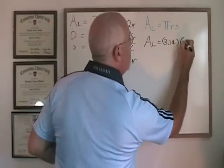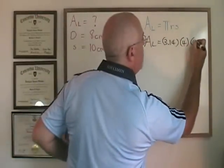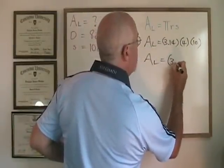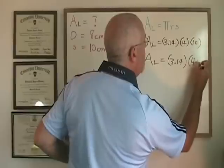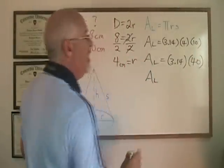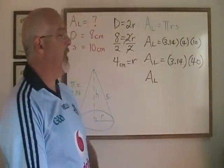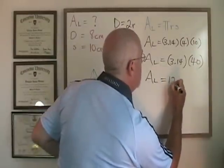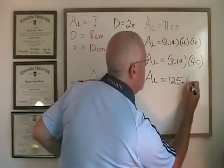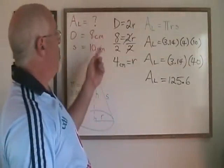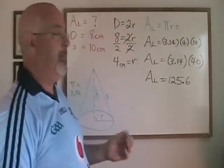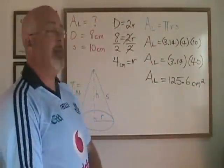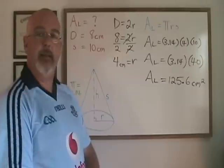Radius is 4, slant height is 10. 4 times 10 is 40. The lateral area is 40 times 3.14, which is 125.6. The unit of measure is centimeters, so the area's unit of measure will be centimeters squared. The lateral area of this cone is 125.6 centimeters squared.